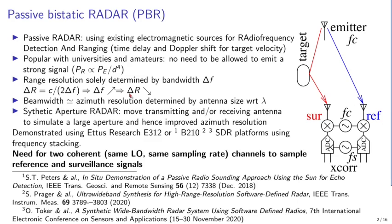Furthermore, beam width — which gives azimuth resolution — is determined by antenna size relative to wavelength. The shorter the wavelength or the higher the frequency, the smaller the antenna needed for a narrow beam width and hence high azimuth resolution. Nevertheless, most applications require extremely large antennas.